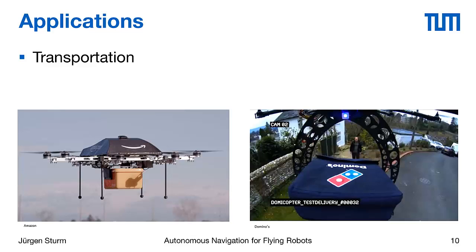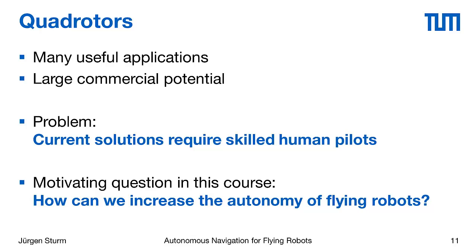Also very interesting, though still at an early stage, are transportation tasks for quadrotors. Amazon launched a video showing an octocopter transporting a package to a customer — more a proof of concept since there are many unresolved legal issues. Domino's Pizza also showed a video delivering a pizza to a client. While still early stage, we are actually close to implementing such applications.